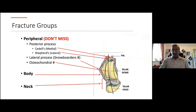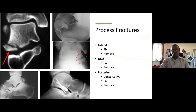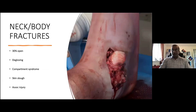For fracture types, the commonest are talar neck fractures. You can also get talar body and talar head fractures, but don't miss peripheral fractures — medial and lateral posterior processes, or the lateral process. Osteochondral fractures of the talar dome can also be tested. For process fractures, obtain a CT scan to determine comminution and fragment size. If fragments are large enough, interfragmentary compression fixation is an option; if small, they can be excised or treated conservatively and excised if symptomatic.